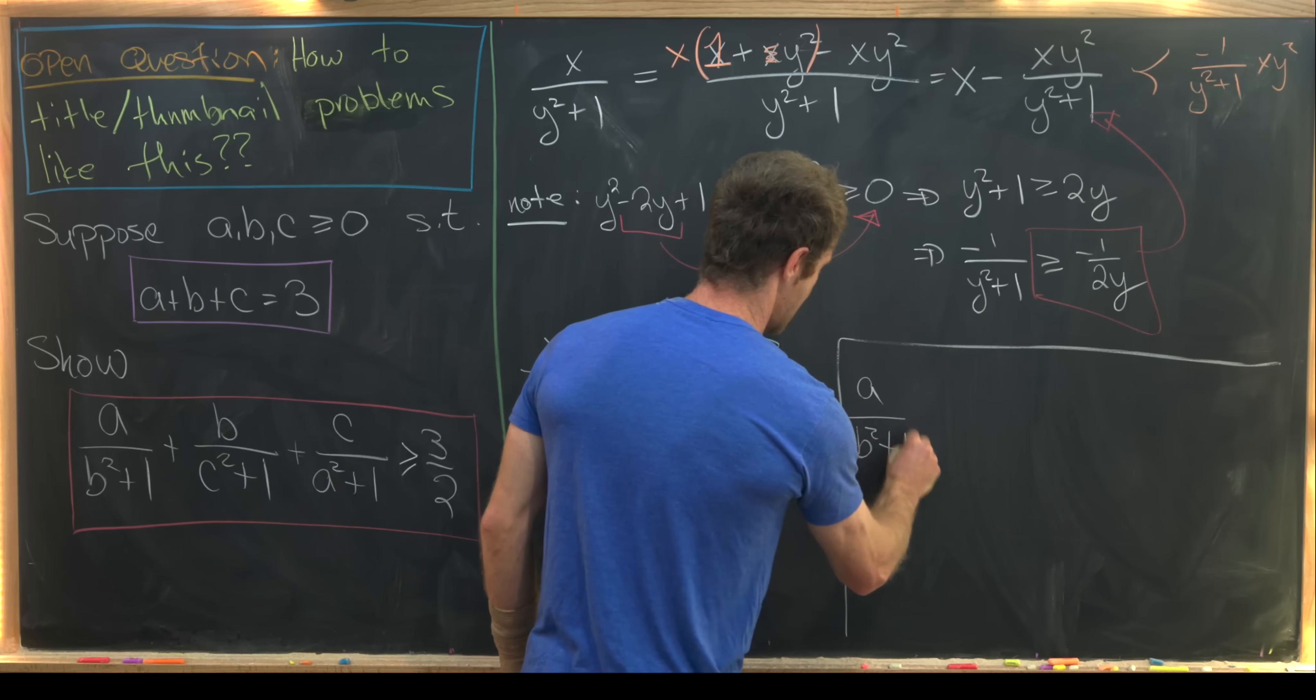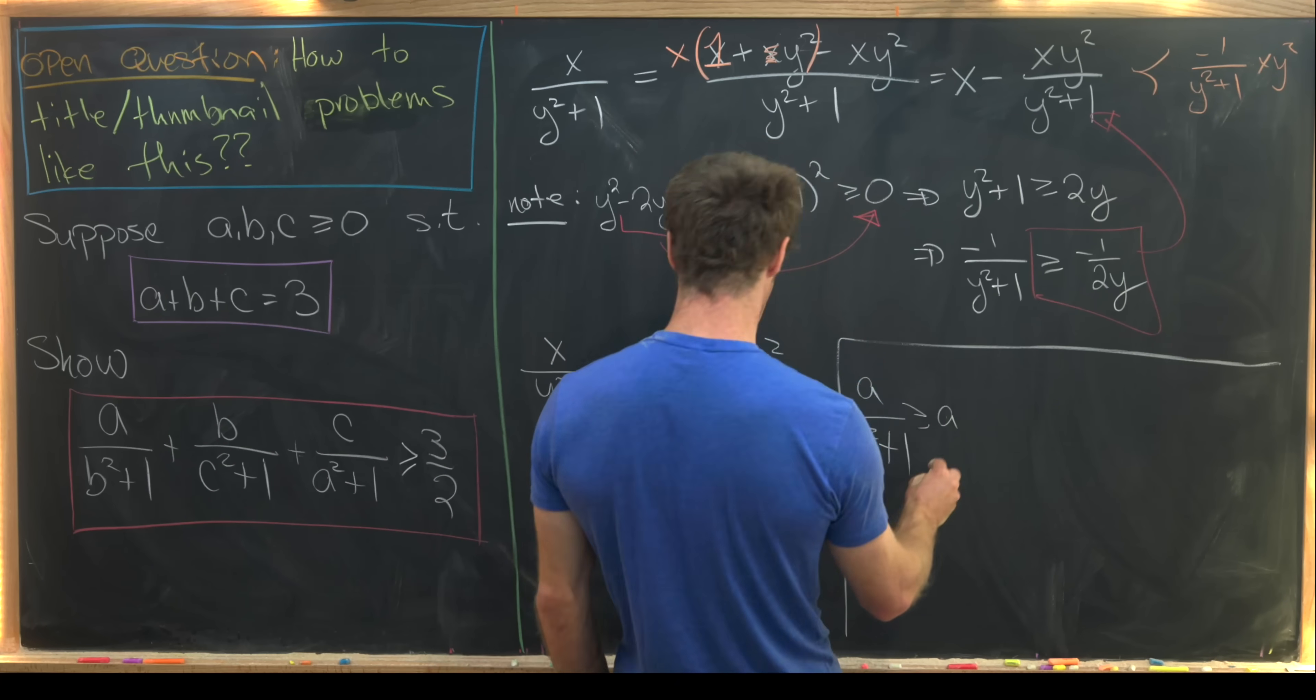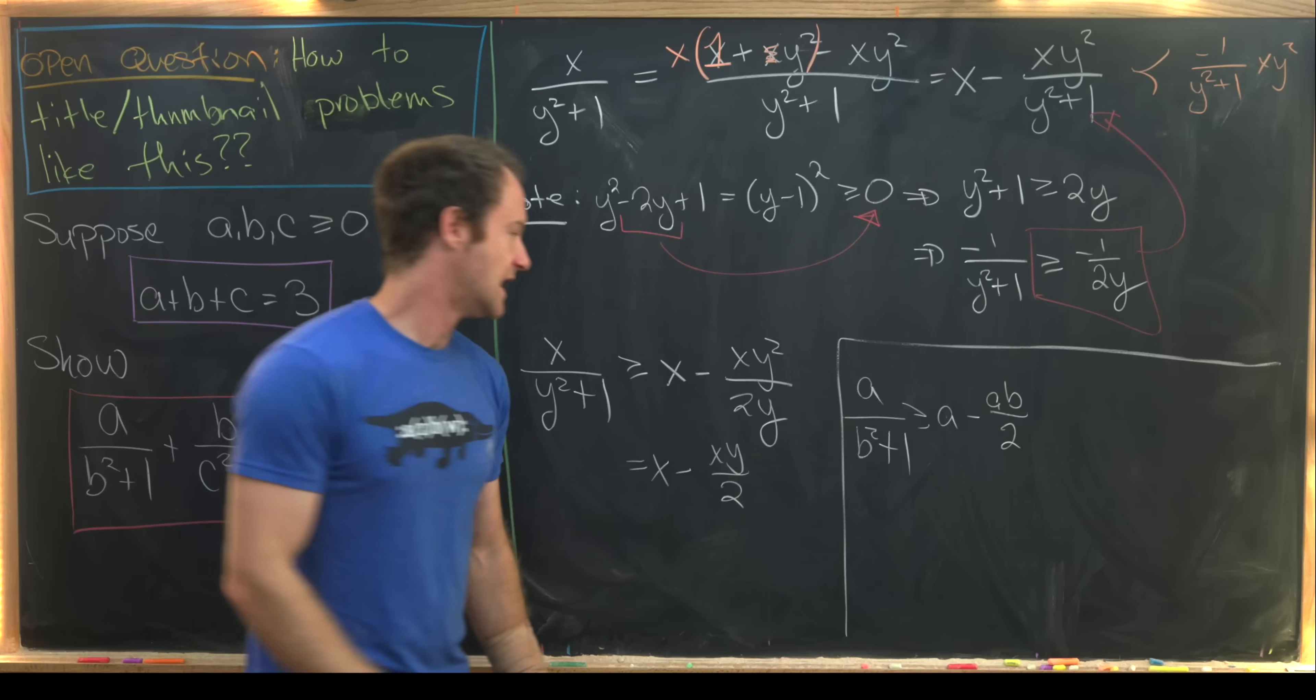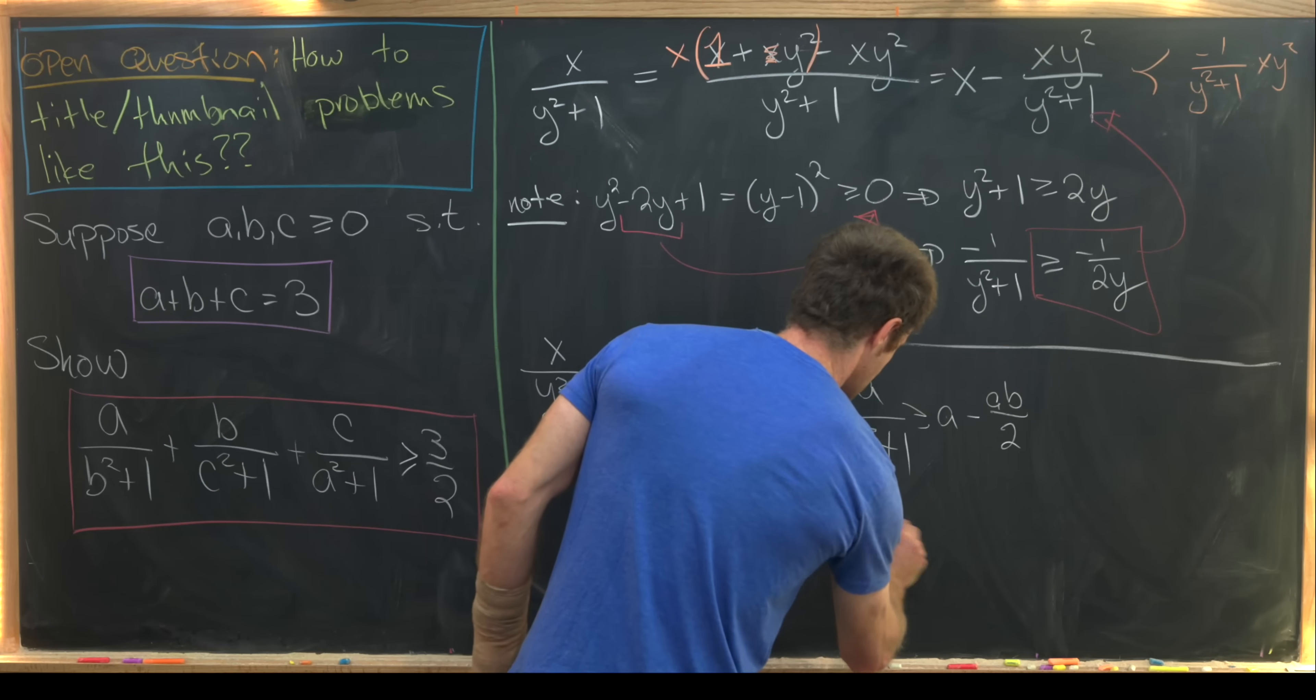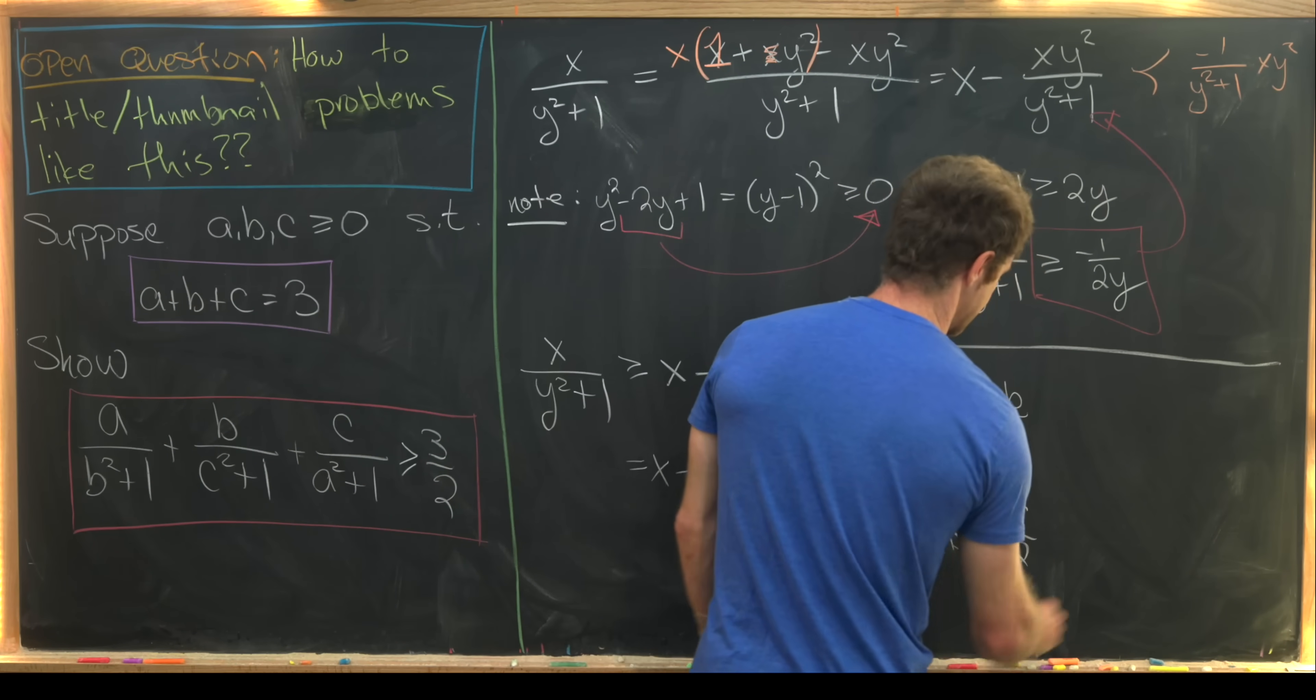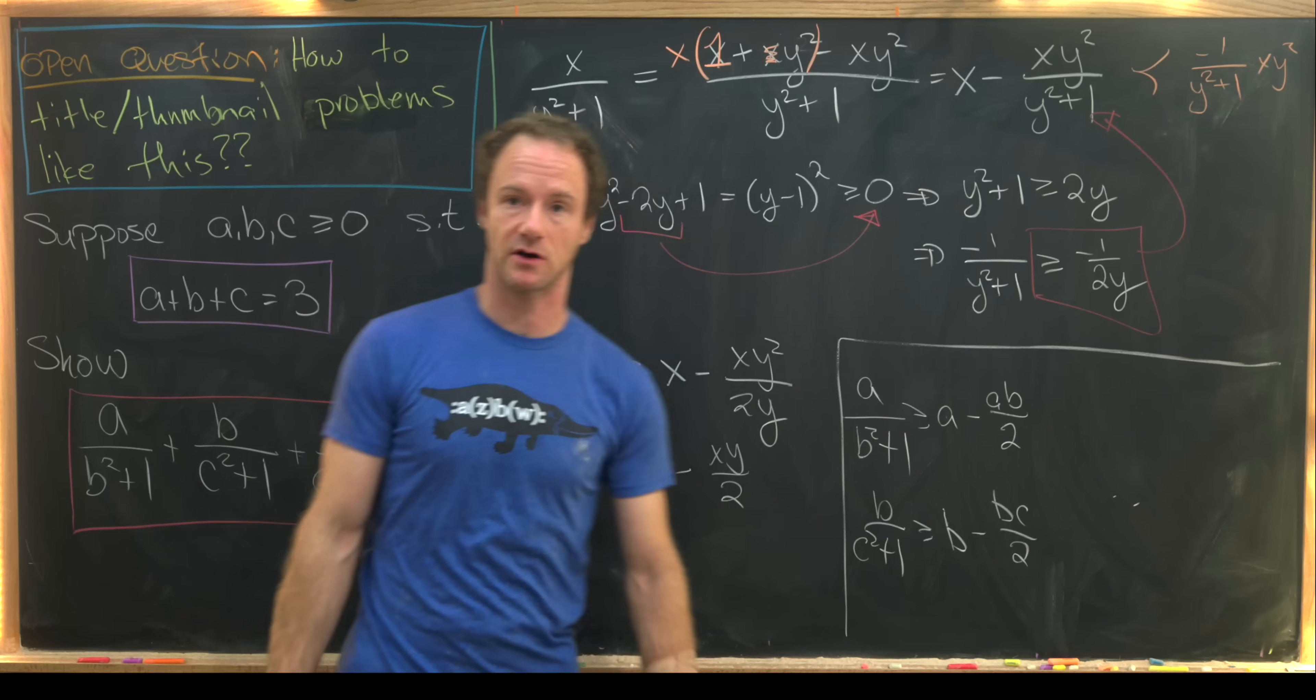So for instance, we have a over b squared plus 1 is bigger than or equal to a minus ab over 2. And then likewise, b over c squared plus 1 is bigger than or equal to b minus bc over 2. And then obviously there's going to be one more for this last term.